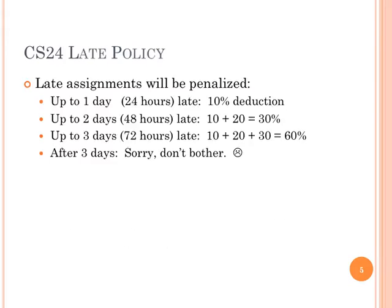Late policy: I basically have an accumulating late penalty. 10% for one day late — that's up to 24 hours late. I tend to give people a pass if you submit like five minutes past the deadline, but if you're getting up to 10 or 15 minutes late you'll start making us grumpy. Two days late: 10 plus 20%, so 30%. Three days late: 10 plus 20 plus 30 is 60%. And then after three days, it's too late.